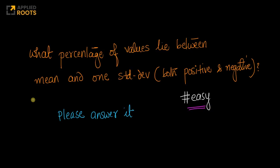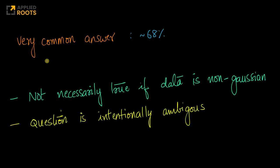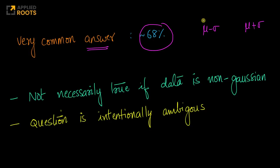Please try to pause this video and try to answer it before you listen to the rest of the discussion and solution. A very common answer that we have seen a lot of students and even data scientists give is: approximately 68% of points lie between mu minus sigma and mu plus sigma. So in this interval — one standard deviation away from mean on the negative side and one standard deviation away on the positive side — many people commonly answer approximately 68%.